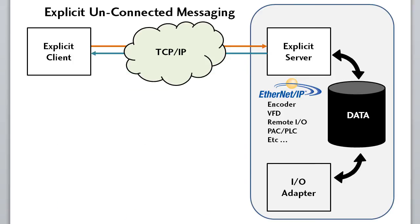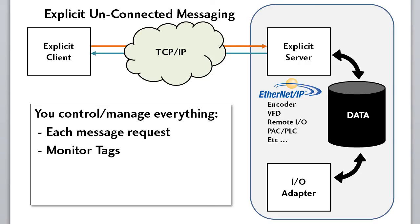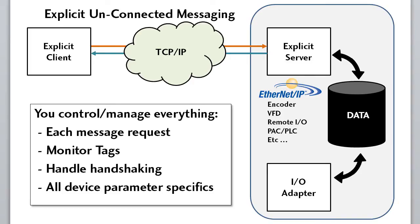This video is about explicit unconnected messaging, so let's focus on that. With explicit unconnected messaging, you are in complete control, which also means you have a lot more work to do. You have to generate each and every message in ladder code, monitor the tags to see if the request is successful, and dig up all the device-specific parameters for each and every message.